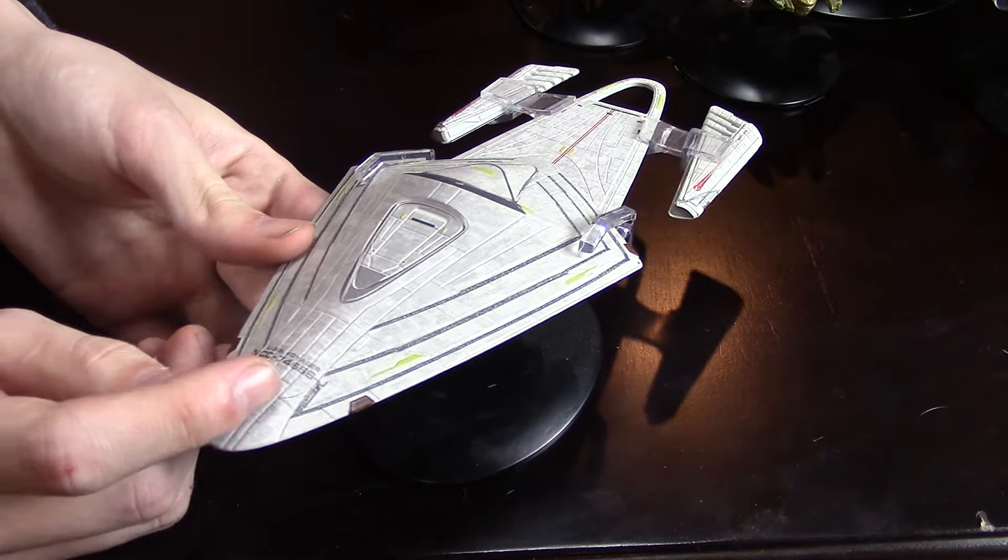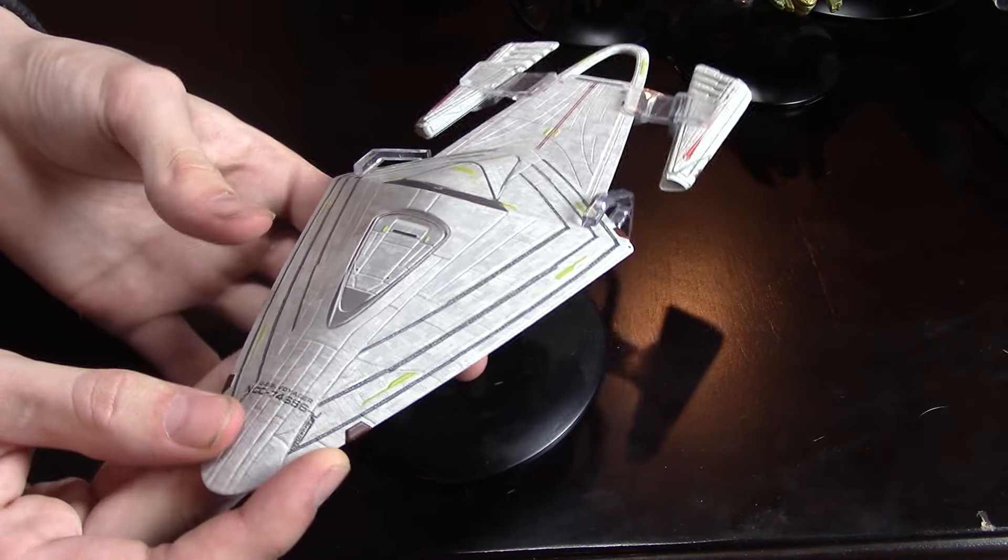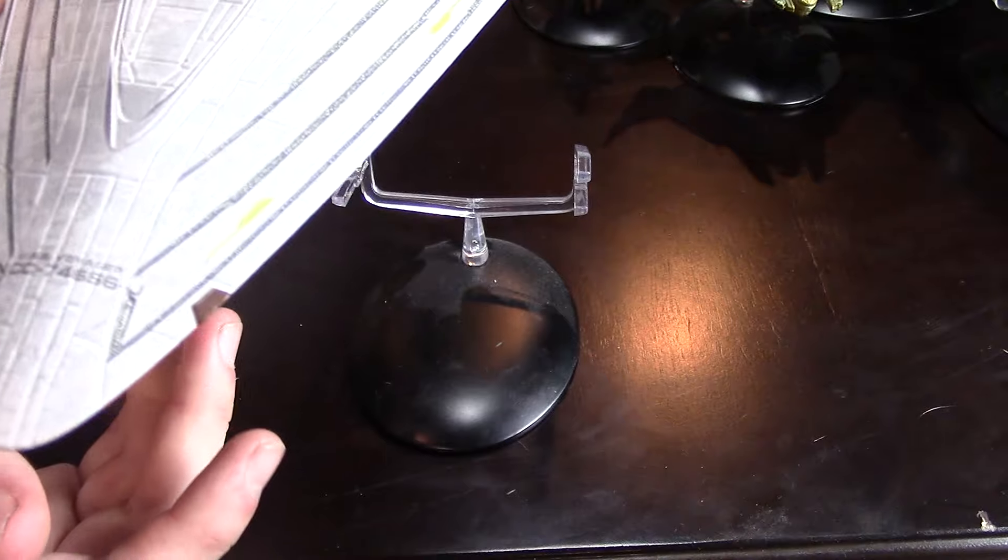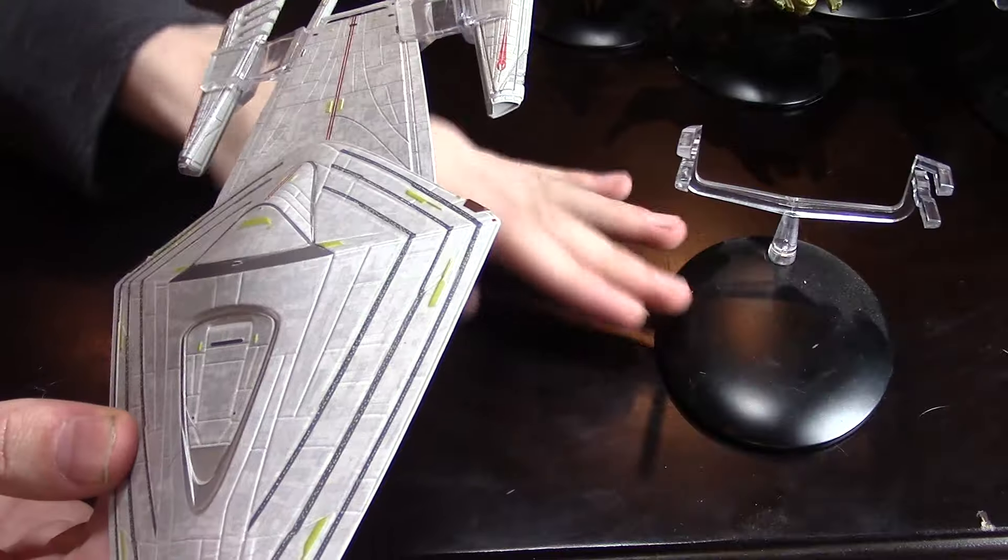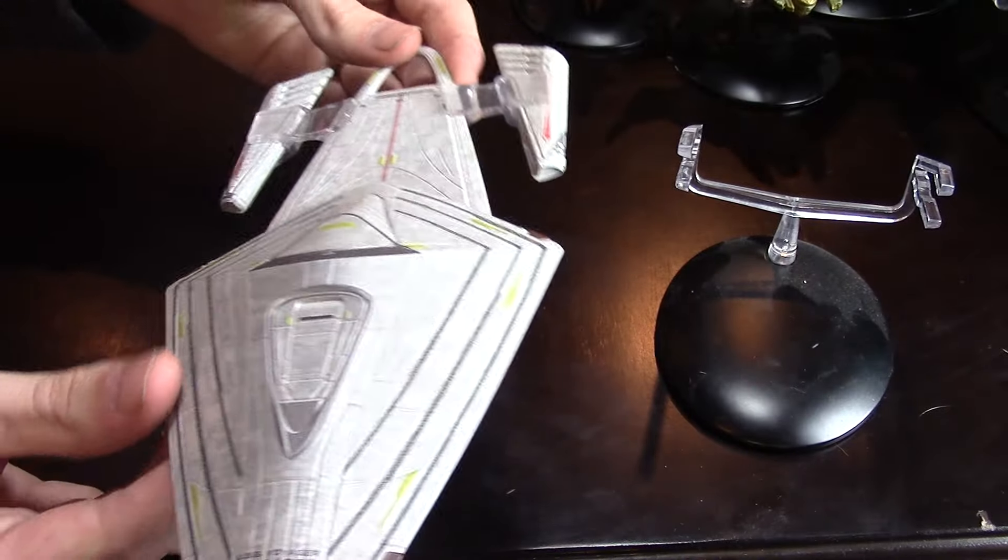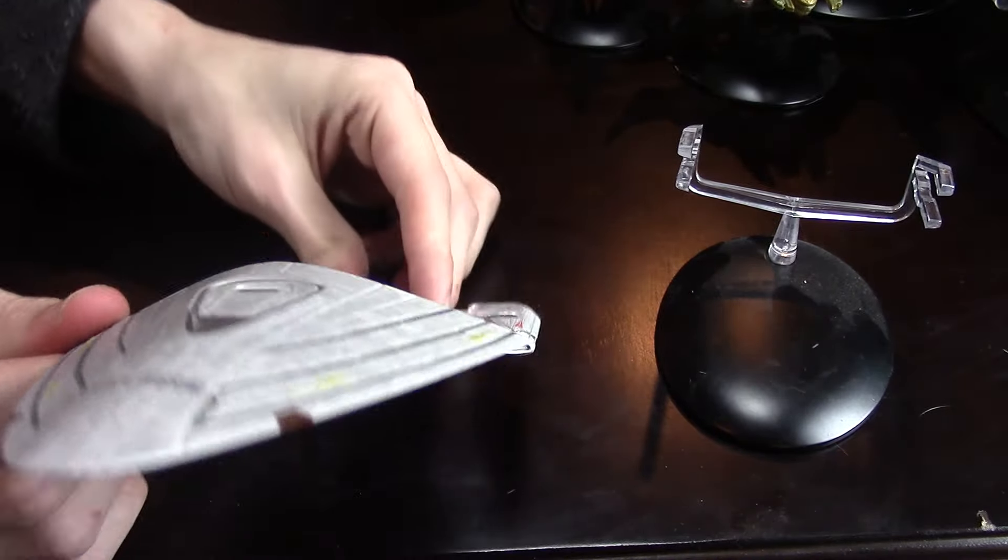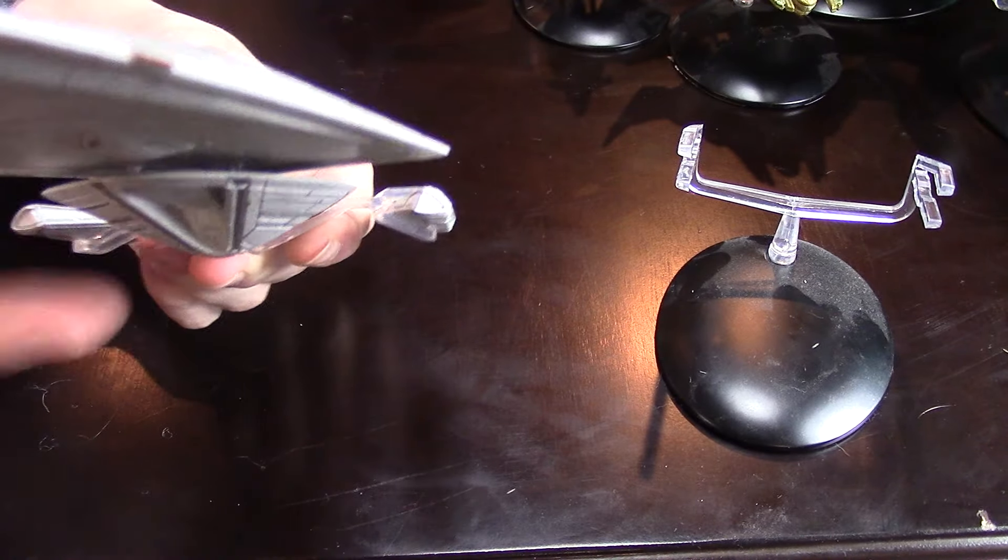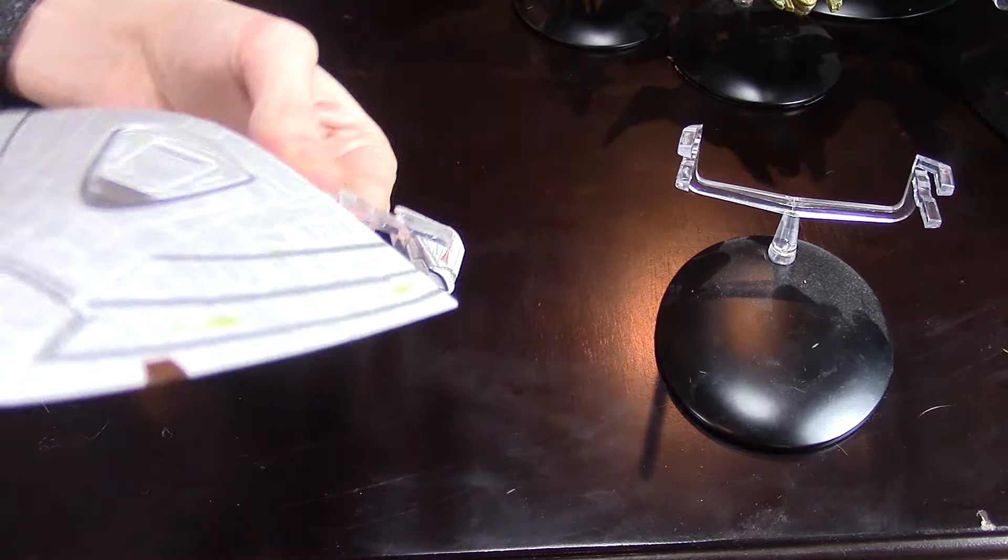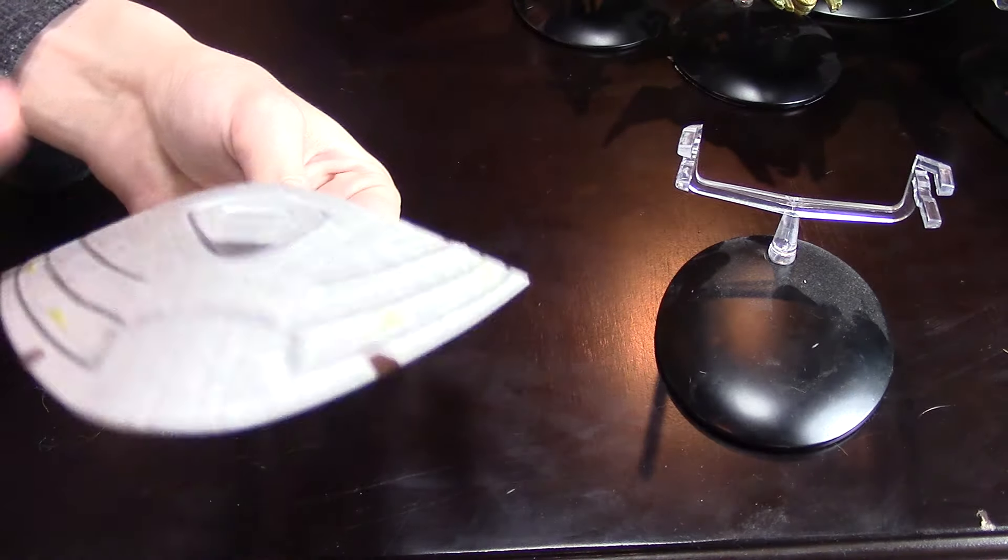You may notice it is the USS Voyager NCC-74656-J. It is another lineage that is not the Enterprise lineage, but it's basically an Enterprise. It's a different... it's a very heroic line of ships.